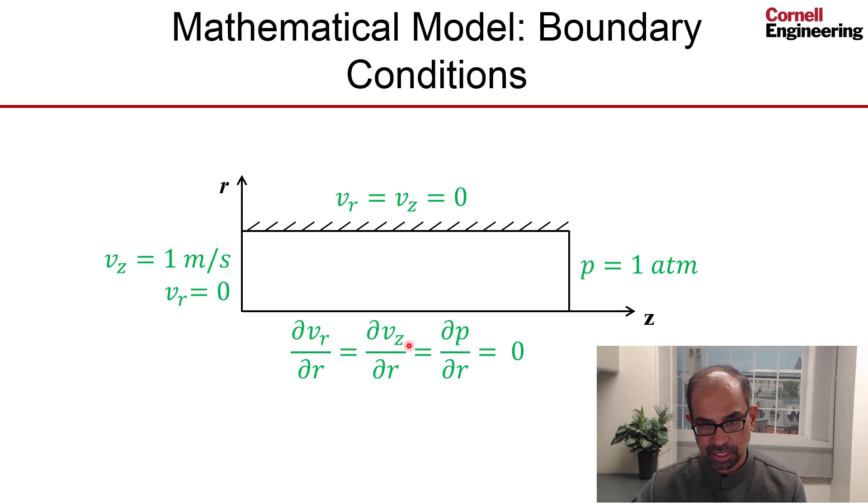And at the axis of symmetry, we set the radial derivatives of velocity and pressure to be zero, because there can be no variation of velocity and pressure in this direction, in the radial direction, at the axis of symmetry. And also, the velocity at the axis of symmetry has to be in the axial direction. So we set the radial component of the velocity to be zero.